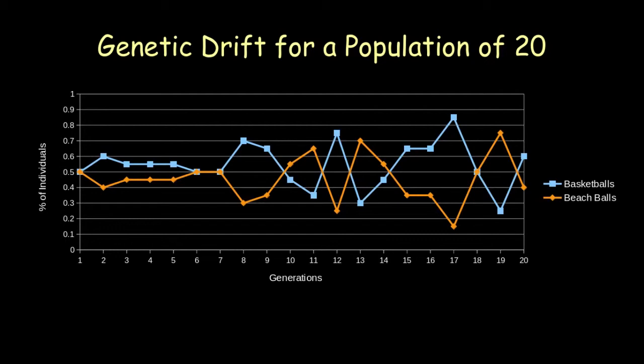Down here we can see the number of generations, and over here we can see the percent of individuals with the given trait. And here we have the traits: basketballs and beach balls.